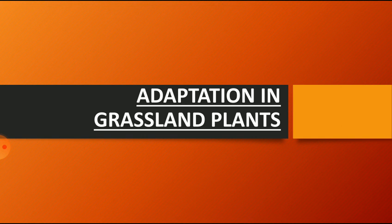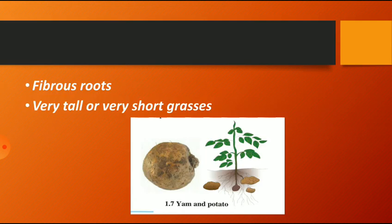Very tall grasses are seen in the equatorial region and short grasses grow in cold regions. These are two adaptations: fibrous roots and varying heights from very tall to very short grasses. Yam and potato are examples of the adaptations of grassland plants.